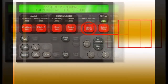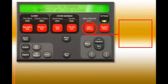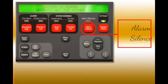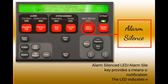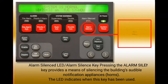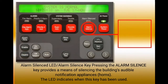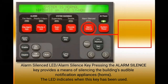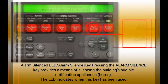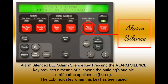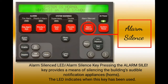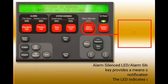Alarm Silenced LED and Alarm Silence Key. Pressing the Alarm Silence Key provides a means of silencing the building's audible notification appliances and horns. The LED indicates when this key has been used.